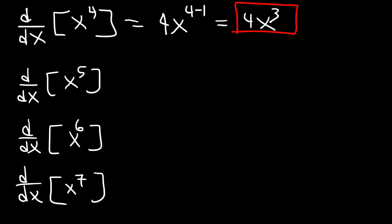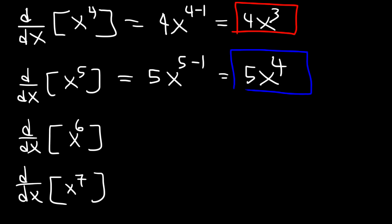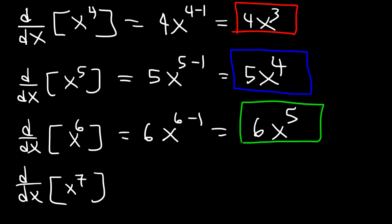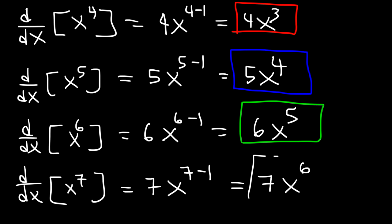For the next example, n is 5, so it's 5x raised to the 5 minus 1 — that's 5x to the 4th power. Here n is 6, so it's 6x to the 6 minus 1, which is 6x to the 5th power. And the last one: n is 7, so it's 7x raised to the 7 minus 1, and since 7 minus 1 is 6, it's 7x to the 6th power.